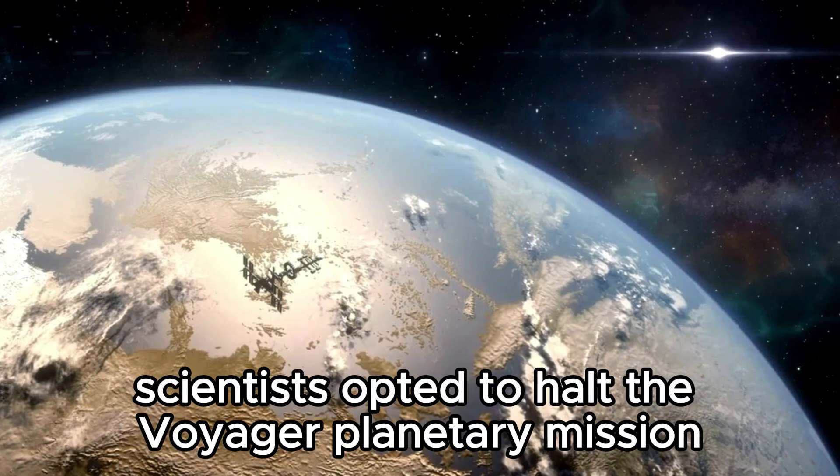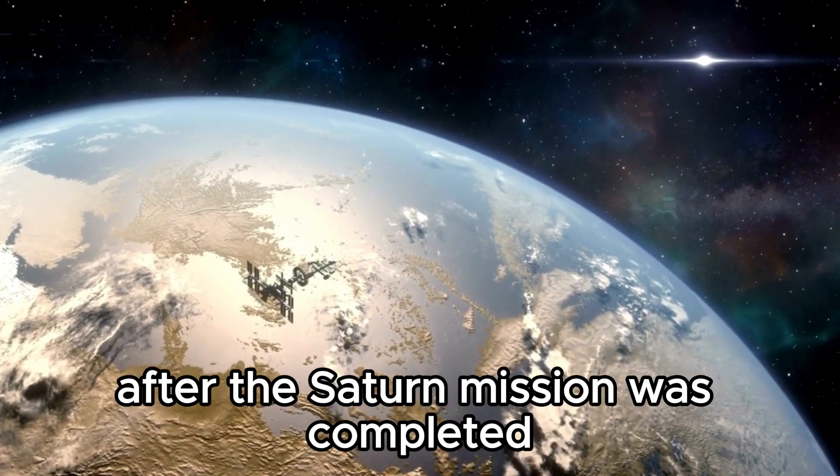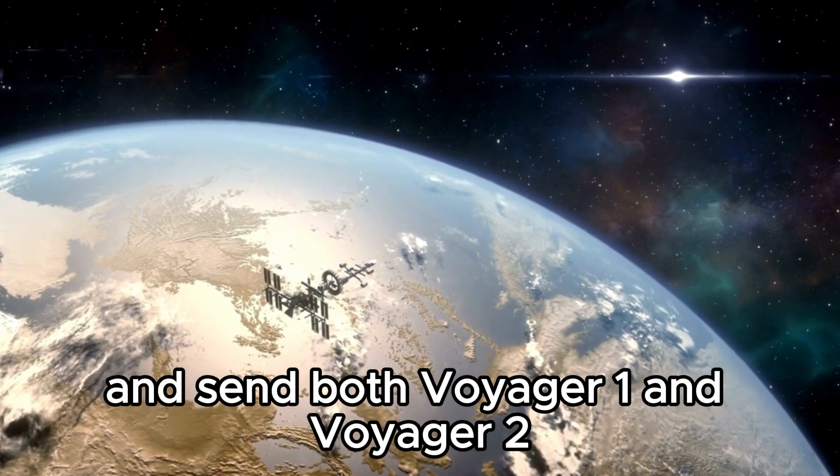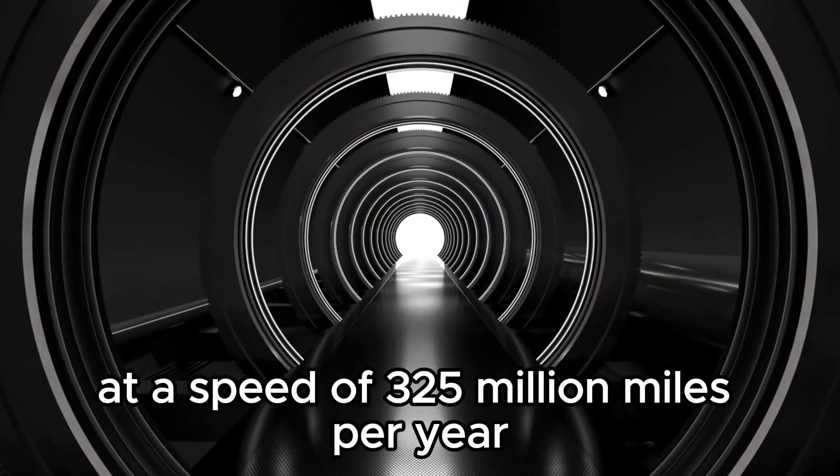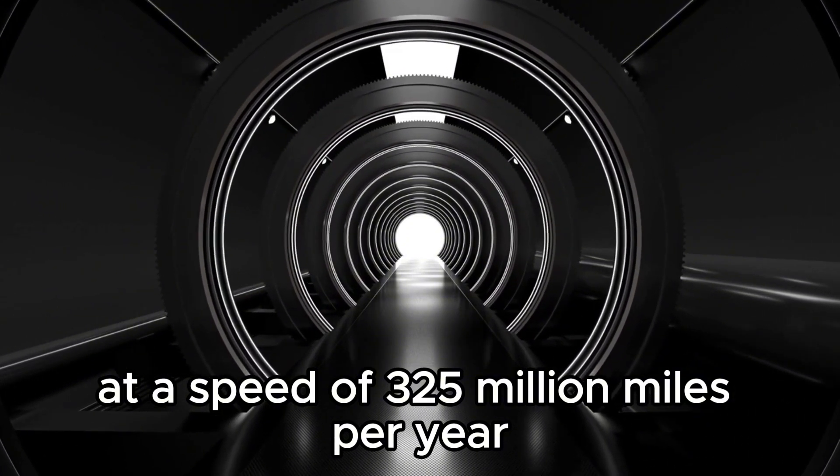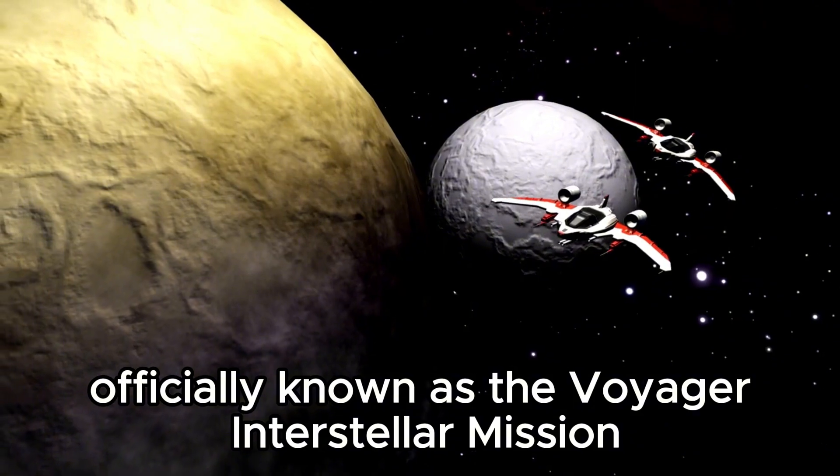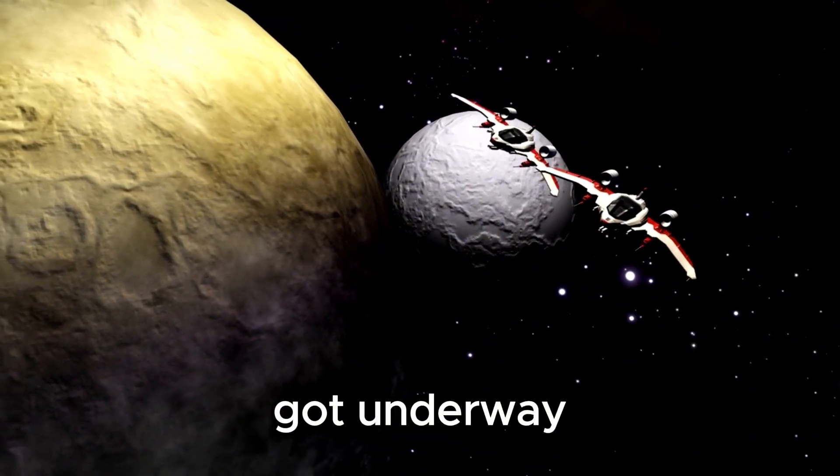Scientists opted to halt the Voyager planetary mission after the Saturn mission was completed and send both Voyager 1 and Voyager 2 outside of our solar system at a speed of 325 million miles per year. In January 1990, the new mission, officially known as the Voyager Interstellar Mission, got underway.